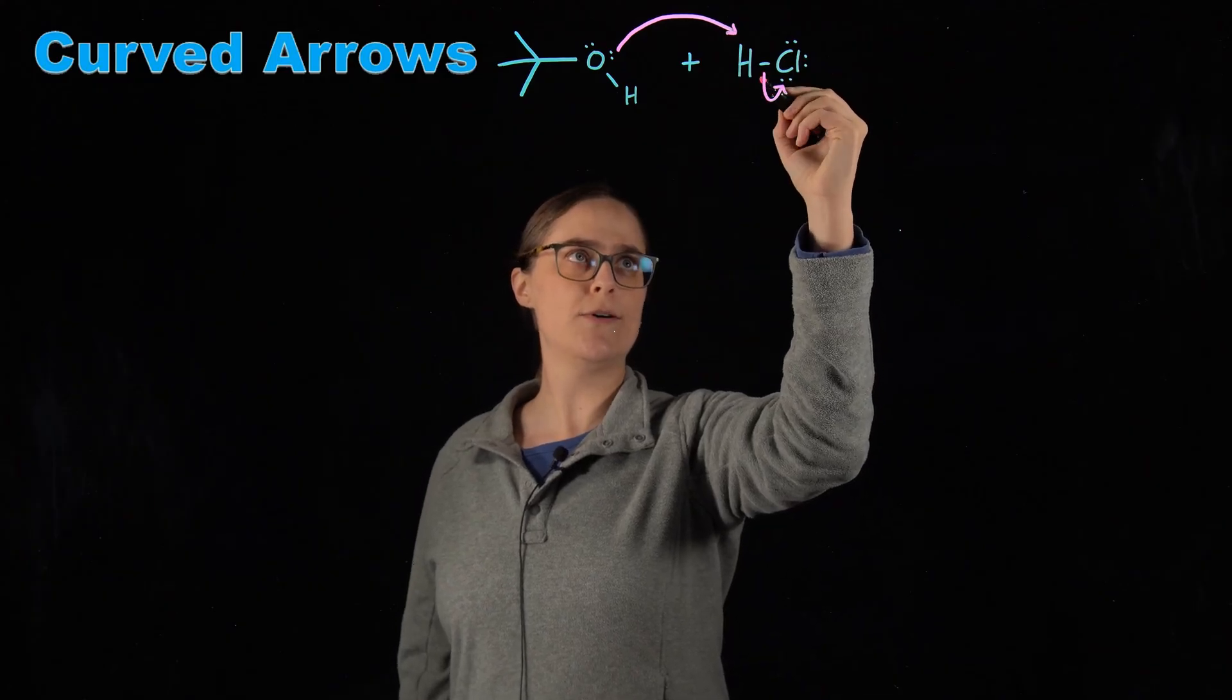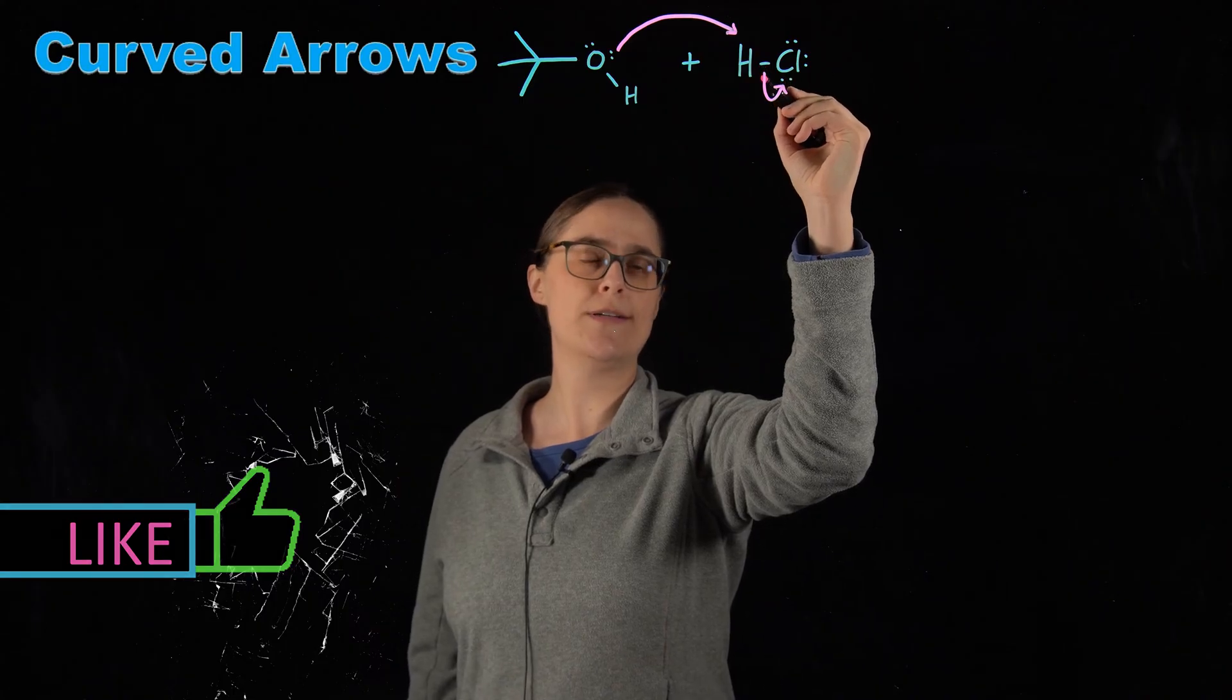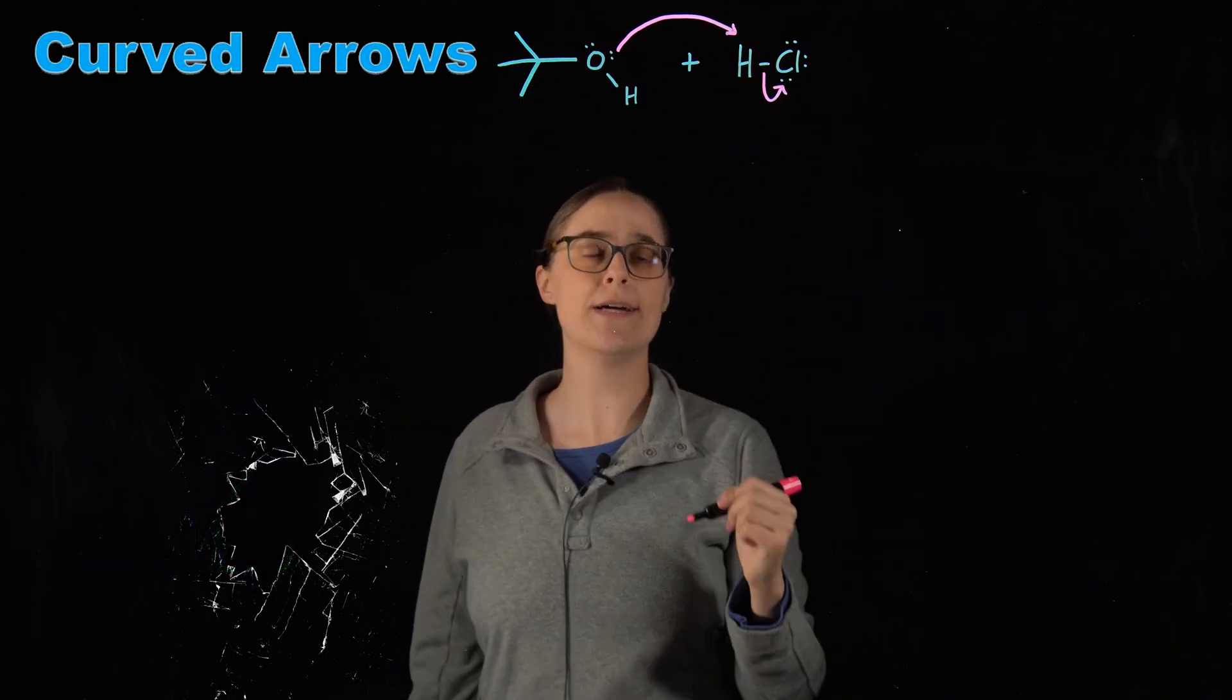And the way that this is drawn is another curved arrow. So you are seeing these two electrons that were shared going entirely to the chlorine.